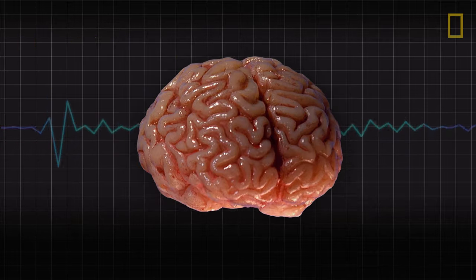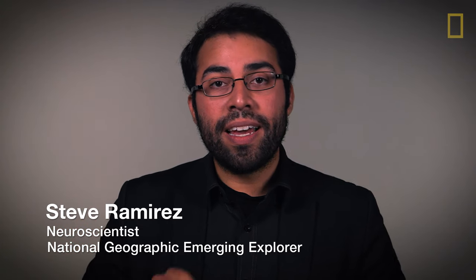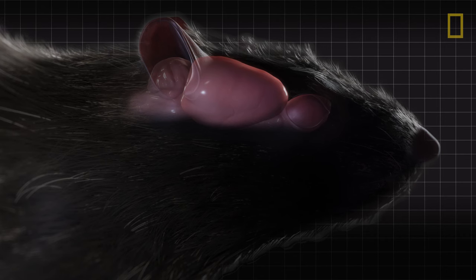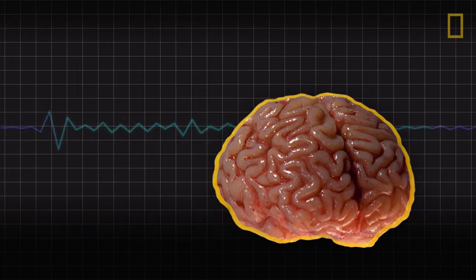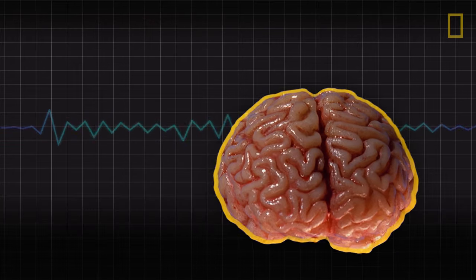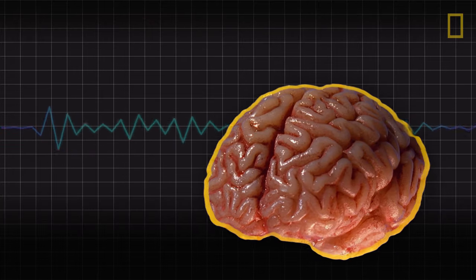If you look at the brain, it looks like multiple Grand Canyons. If you look at a mouse brain, you don't see that — it's very smooth. The outer mantle of the brain, the cortex, is very smooth in a mouse. But we have all these grooves and valleys in a human brain.